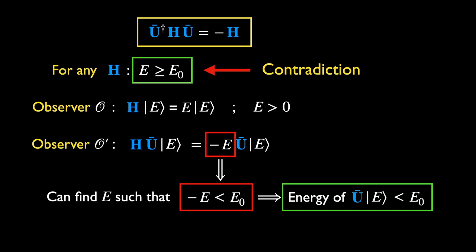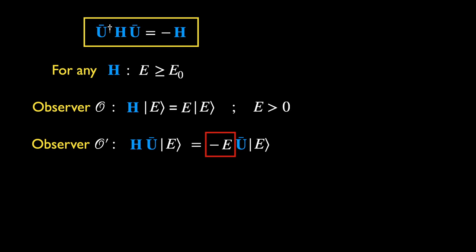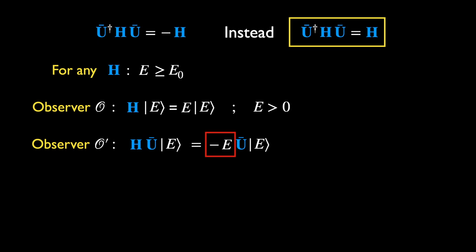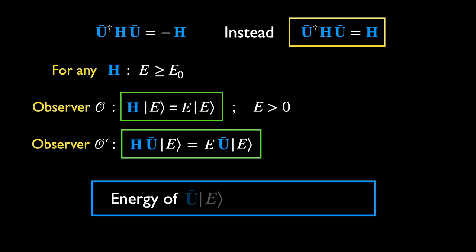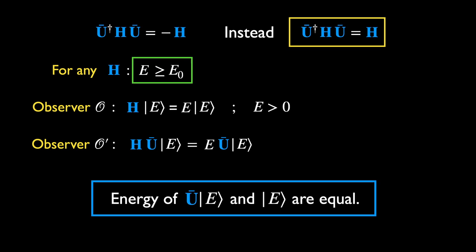Therefore, the equation which leads to this conclusion must be inconsistent. This problem could be easily fixed if we assume instead that the action of U-bar leaves H invariant, thereby allowing us to drop the resulting minus sign in front of E. As a result, the state E and U-bar E would have the same energy, which is greater than E0, thus removing the contradiction. So we should use the consistent relation instead.